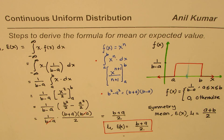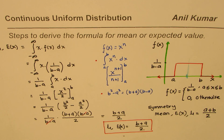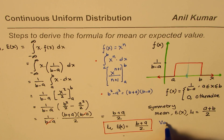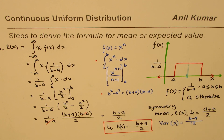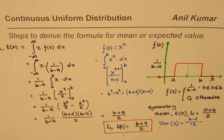So a plus b divided by 2 and b plus a divided by 2 are the same thing. I'm Anil Kumar — in the next video we'll find the formula for variance, which will be slightly more complicated but important to understand. The variance for x equals b minus a squared over 12. Those who don't want to derive it can take that formula directly. Thanks for watching.